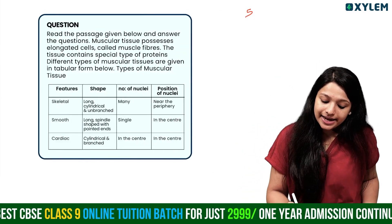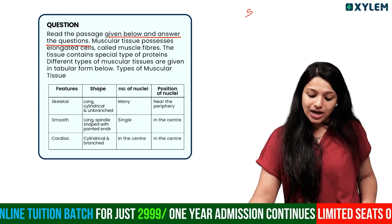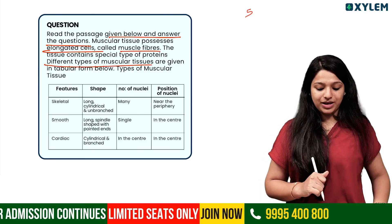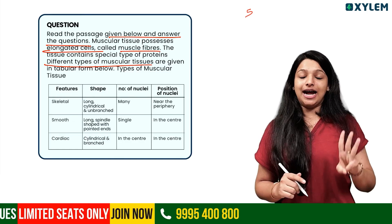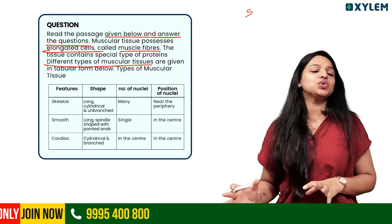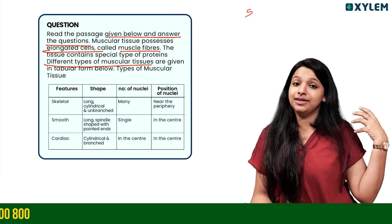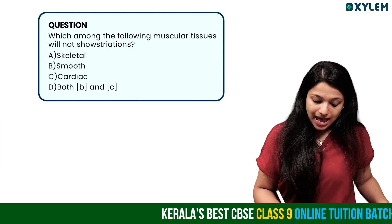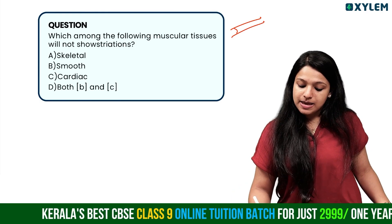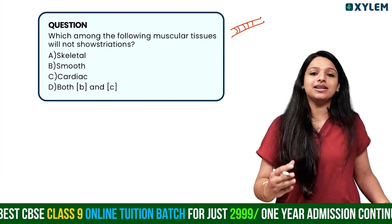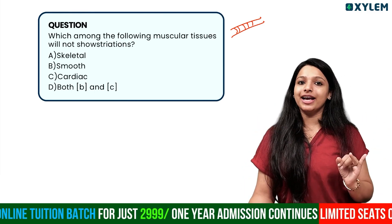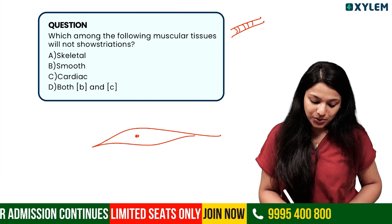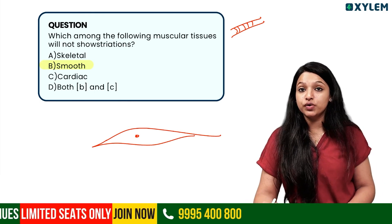This is a case study based question. Read the passage: muscular tissue possesses elongated cells called muscle fibers. The tissue contains special proteins. Different types of muscular tissue are skeletal, smooth, and cardiac. The features to compare are shape, number of nuclei, and position of nuclei. Which muscular tissue will not show striations? Smooth muscle does not show striations — skeletal and cardiac muscles do.